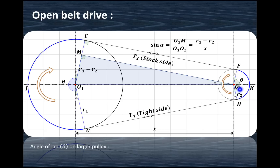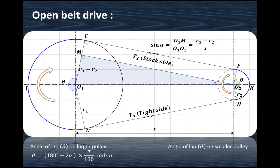Similarly, on the smaller pulley, the angle of lap is 180 minus this alpha and this alpha. So it is pi minus 2 alpha, or 180 minus 2 alpha. In case of the larger pulley, the angle of lap is given by 180 plus 2 alpha, converted into radians. Similarly, in case of the smaller pulley, the angle is 180 minus 2 alpha, multiplied by pi over 180, in radians.